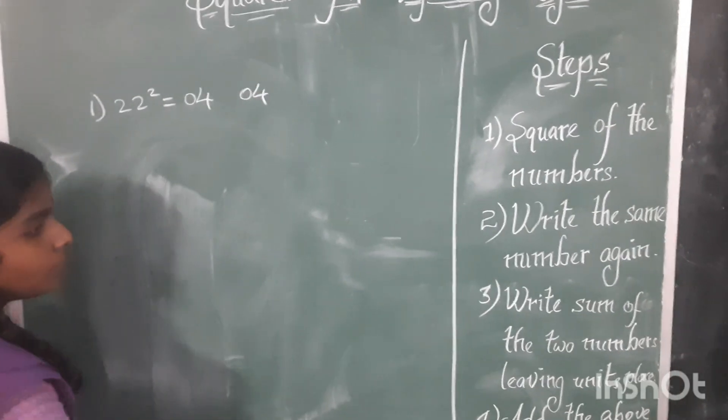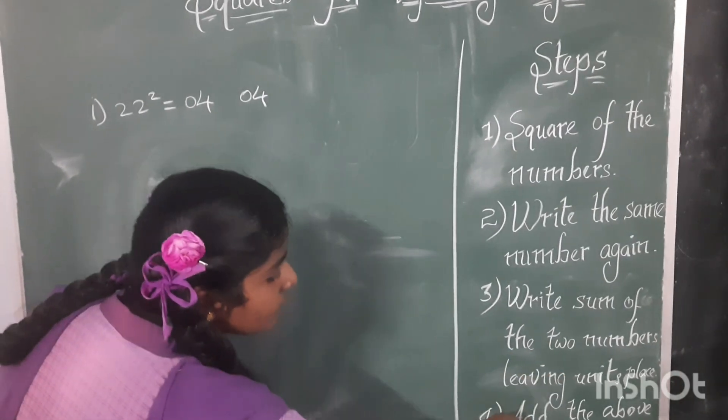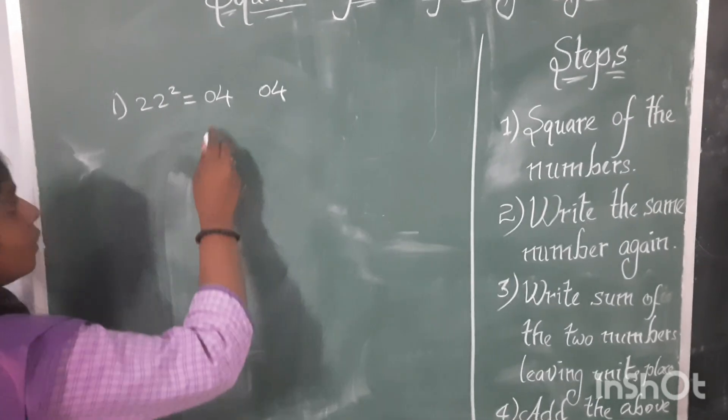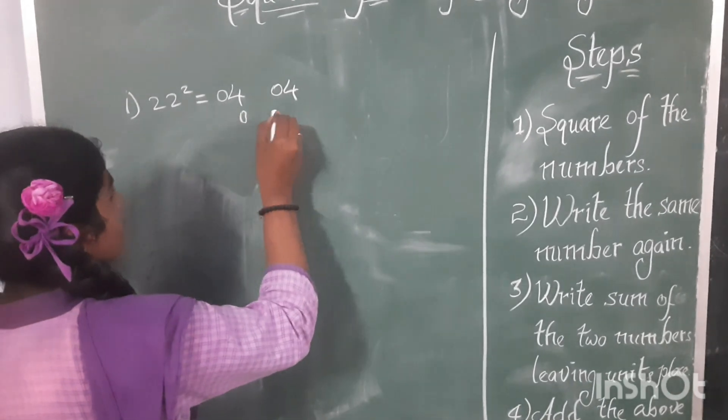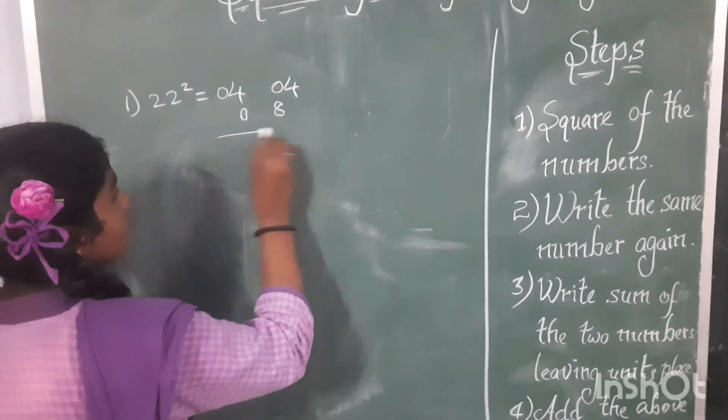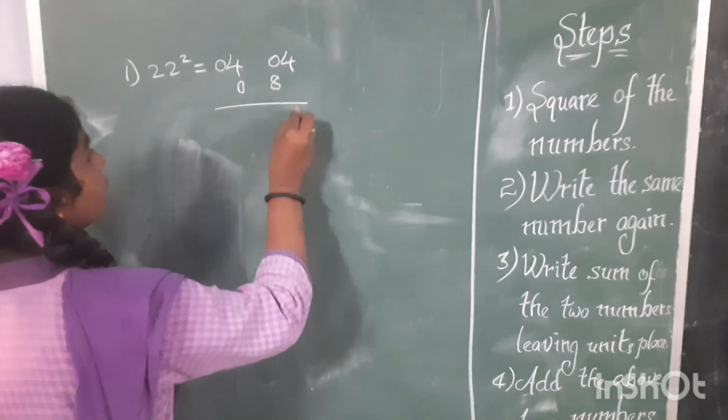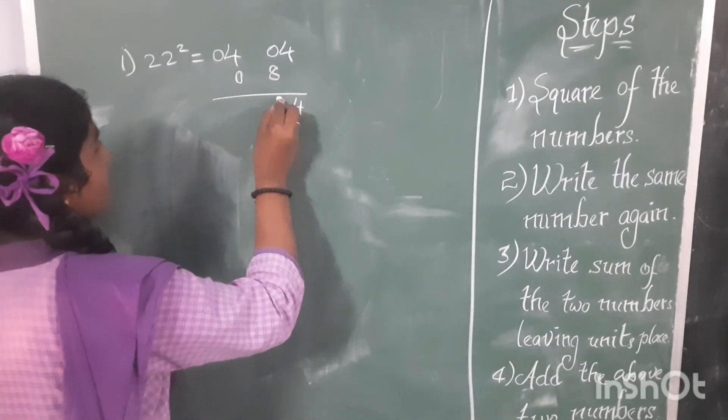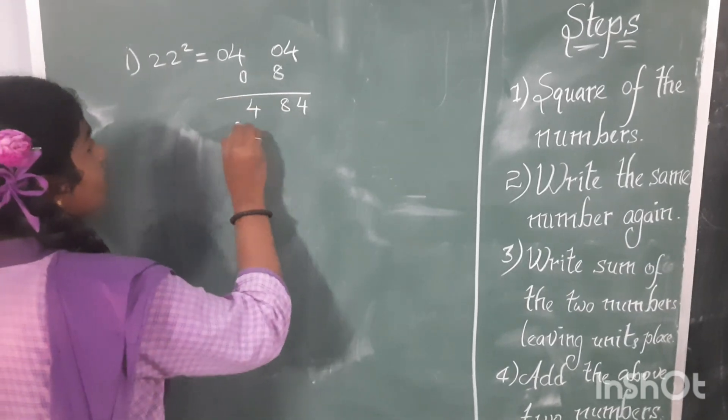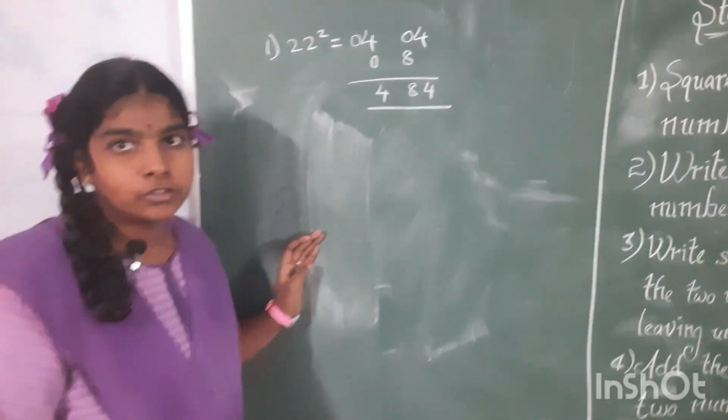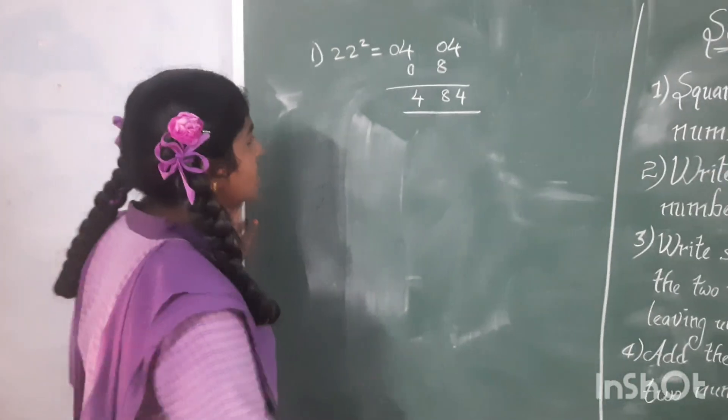Third step, write sum of the two numbers leaving in its place. 4 plus 4 is 8. I am writing 08. Fourth step, add the above two numbers. 4, 0 plus 8 is 8. 4 plus 0 is 4. 22 square is equal to 484. So let's see second example.